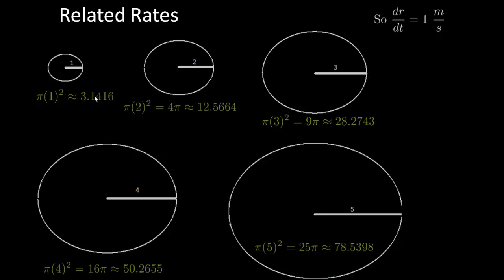So notice that between the first and second second, the area has increased by about 9. And then between the second and third second, it's increased by about 16. And then from 28 to 50, that's a change in about 22. And then from 50 to 78, that's about a change in 28. So notice that every second as time goes on, the change in the area is getting bigger. And that's what I'm trying to find.